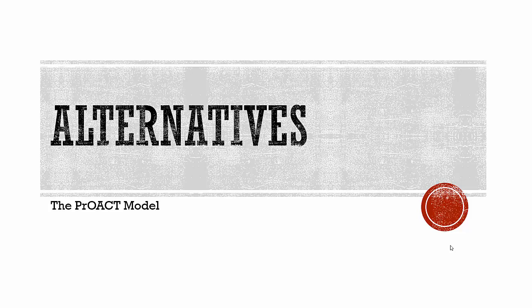This is the fourth video in our problem solving and decision making series for the School of Business at Washburn University. In this series we're discussing the PROACT model, which is a systematic model used to make decisions and solve problems. In the previous videos we've looked at defining the problem and determining what the objectives are. In this video we're going to walk through how to determine and explore alternatives for solving your problems and meeting your objectives.